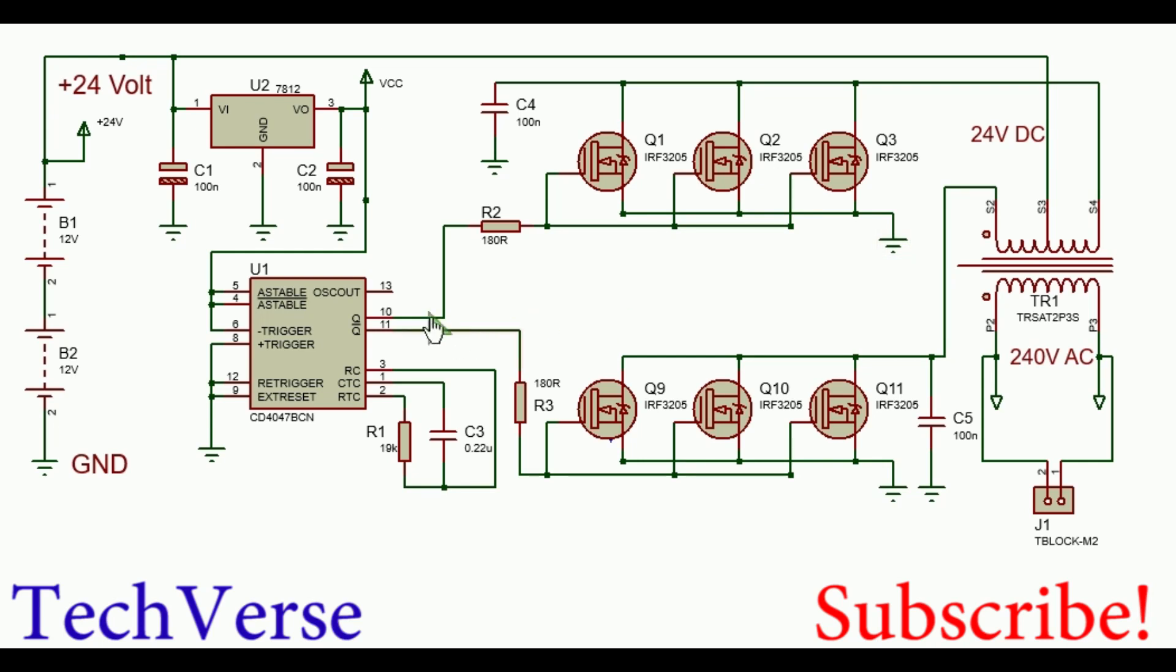When Q turns low, Q bar will be high and the lower MOSFETs will all conduct. Current will flow the other way in the primary winding through the MOSFETs into ground.